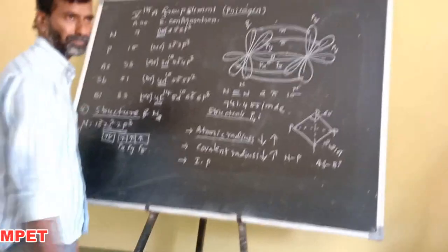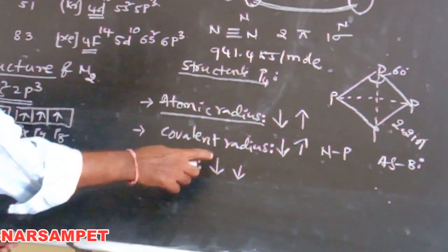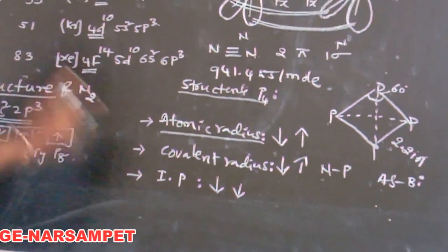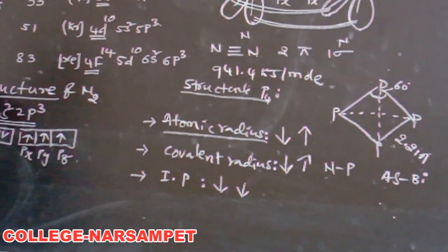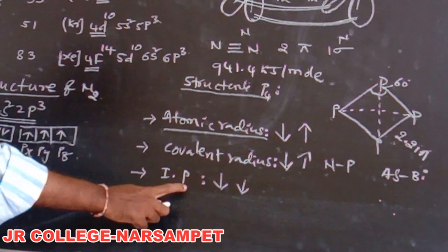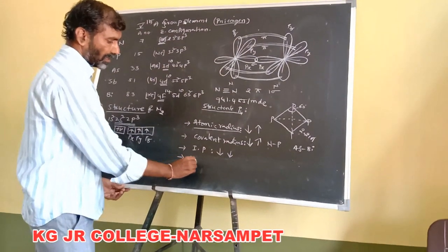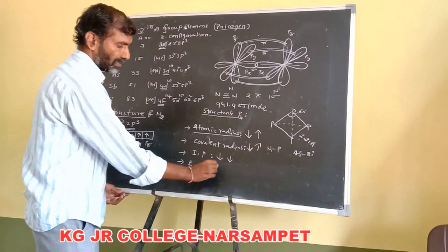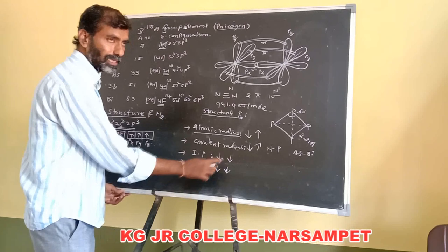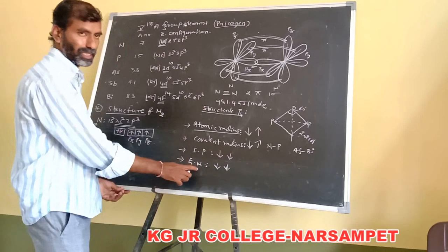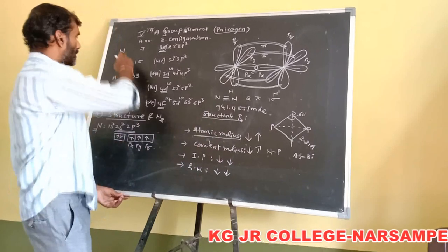Ionization potential values decrease from top to bottom, that is from nitrogen to bismuth, because atomic size increases from nitrogen to bismuth. Similarly, electronegativity values decrease from nitrogen to bismuth because atomic size increases.